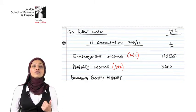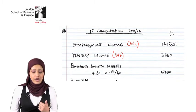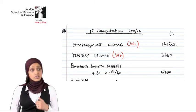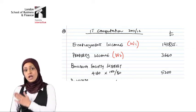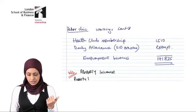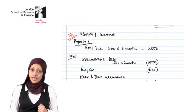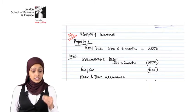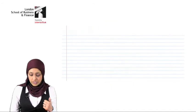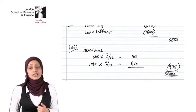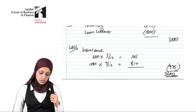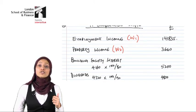Looking at the next one, we have property income, and what I'm saying there is that property income of 3,660 can be found in Working 2. What the marker would do is go and look for your workings, and when he gets to the workings page, he looks for Working 2 and sees your property income there.